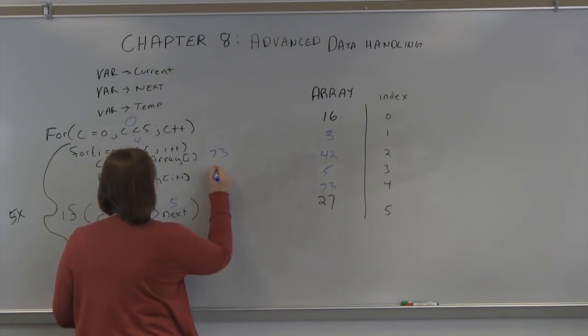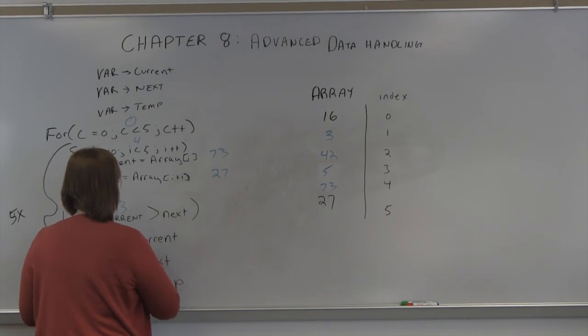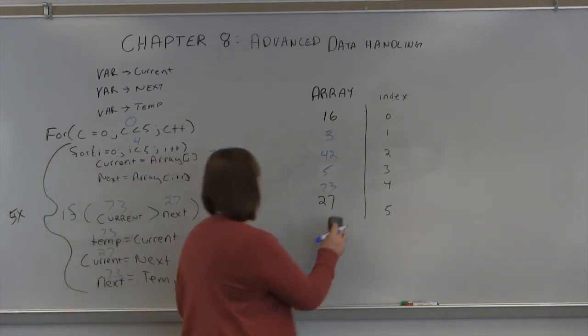So 73 to 27. And that is correct. 73 is greater than 27. So we want to swap those. So temp becomes 73. Current becomes 27. Next becomes 73. And we have just swapped them.